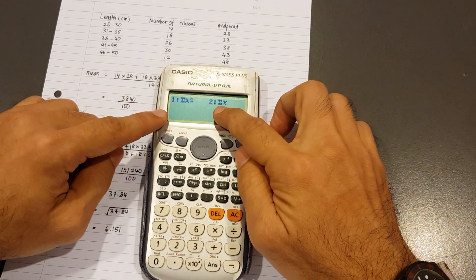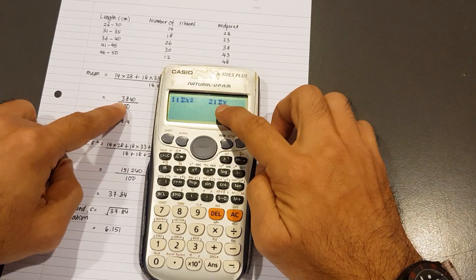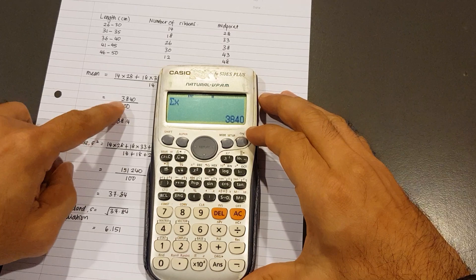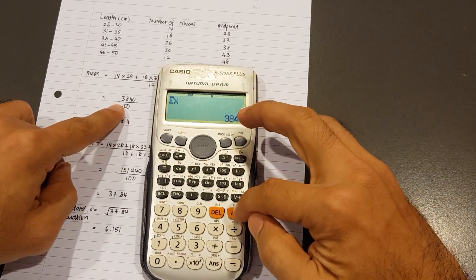I key number 3. You see that's sigma X. Sigma X will give us this value. So I tap 2, equals. And there you have it - 3840.